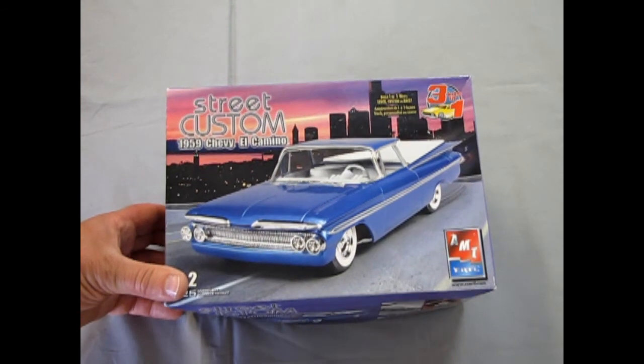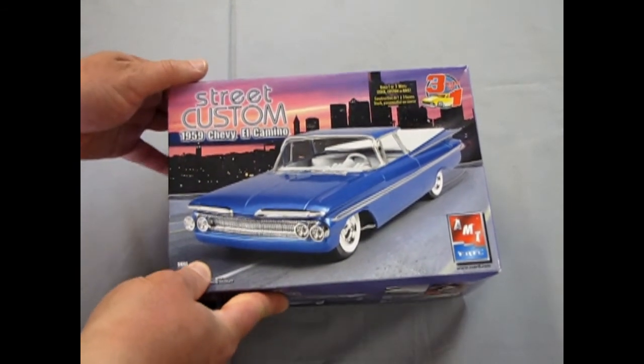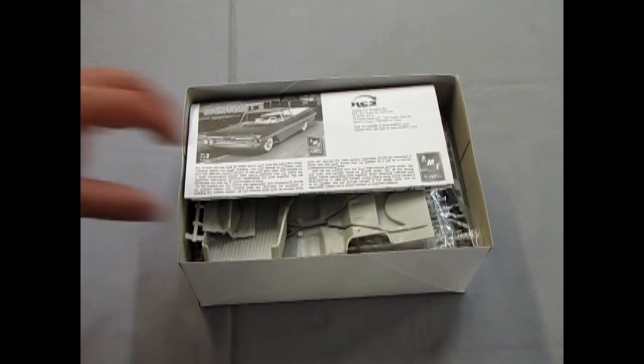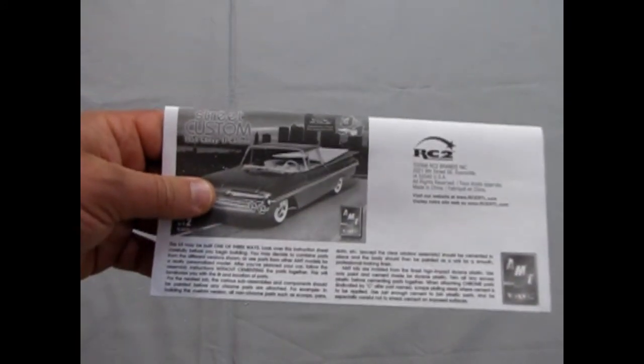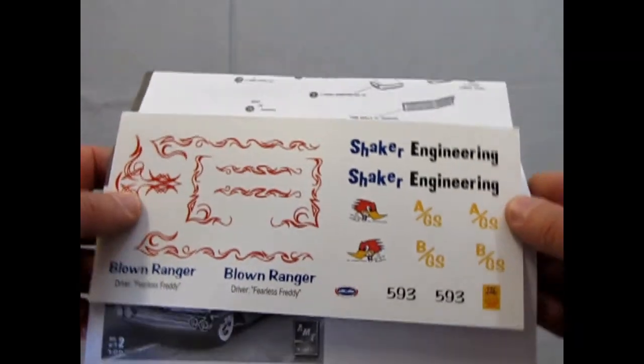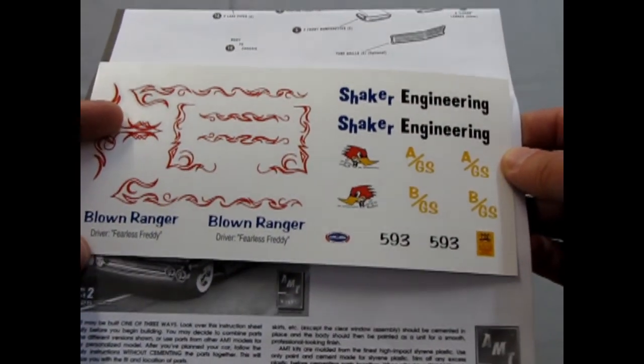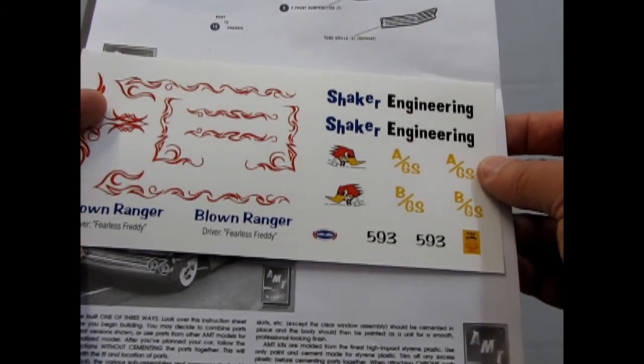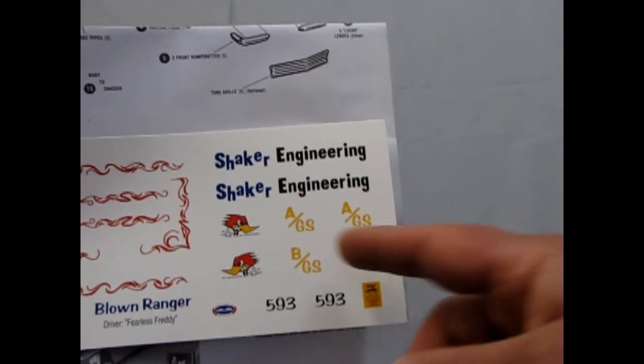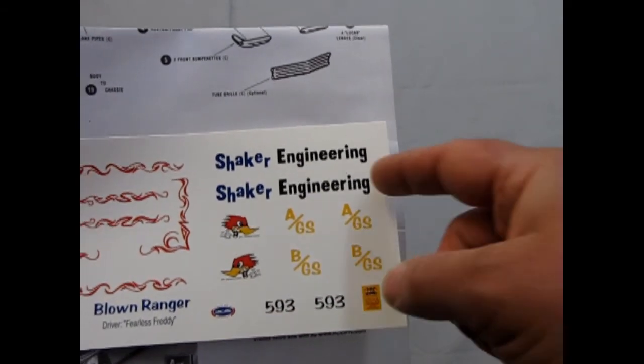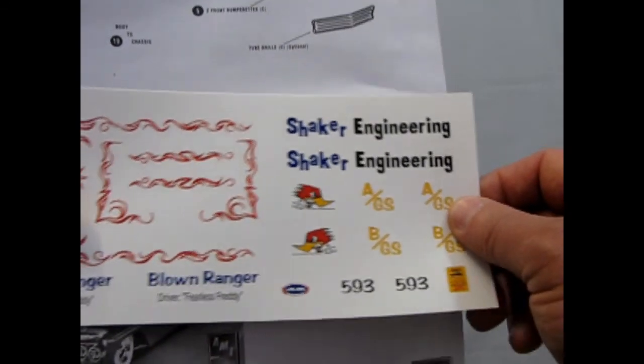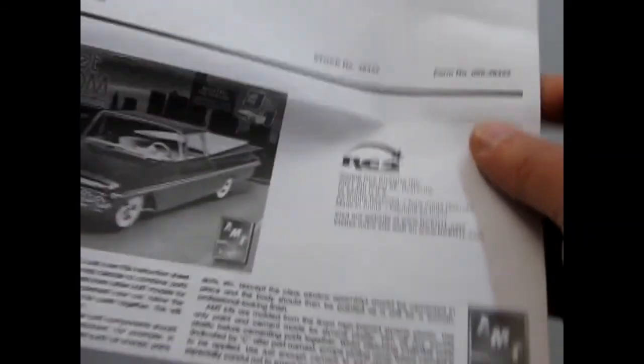Now let's open up the box on this 1959 Chevy El Camino Custom Street Custom. This is actually a 3-in-1 kit so you can build it as stock and racing which is always a bonus. And now let's move this to the side and take a look at our instructions. Oh and look at these nice cool decals. We got some pinstriping over here and then dragster stuff like Blown Ranger, Driver Fearless Freddy, and of course our Clay Smith decals here. These are gasser classes, A gasser and B gasser class. 593 cubic inches, Shaker Engineering, and some a little poster and a National Hot Rod Association decal for your car.